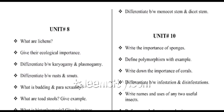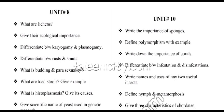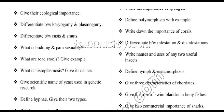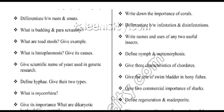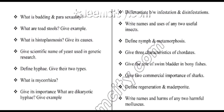From unit number eight, we have: what are lichens — give their ecological importance; differentiate between karyogamy and plasmogamy; differentiate between rust and smut; what is budding and parasexuality; what are toadstools — give example; what is histoplasmosis — give its causes; give scientific name of yeast used in genetic research; define hyphae and give two types; what is mycorrhizae and its importance; what are dikaryotic hyphae — give example.